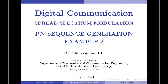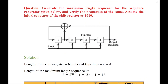Hello everyone, welcome to digital communication tutorials. In this video, I am going to show you how to generate a maximum length sequence, which is a form of PN sequence, when you are given a sequence generator. I will read out the question now: Generate the maximum length sequence for the sequence generator given below and verify the properties of the same. Assume the initial sequence of the shift register as 1010.